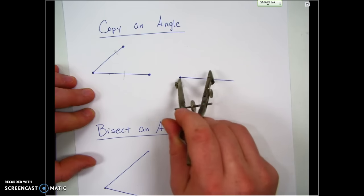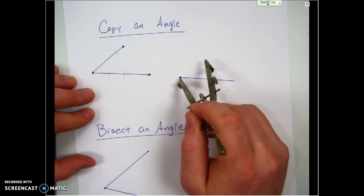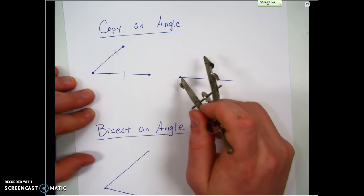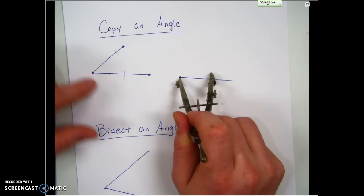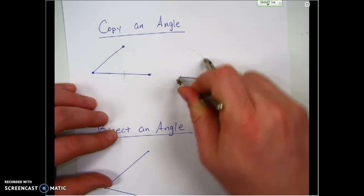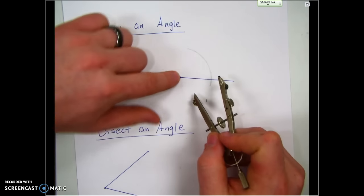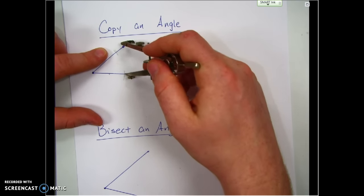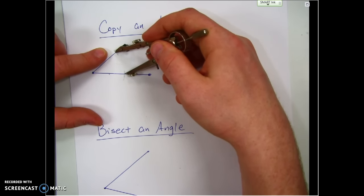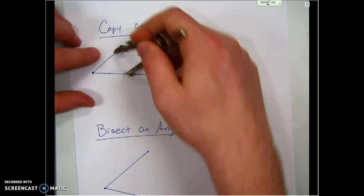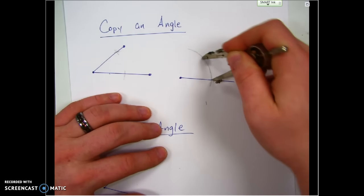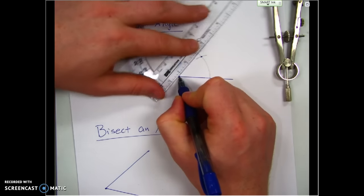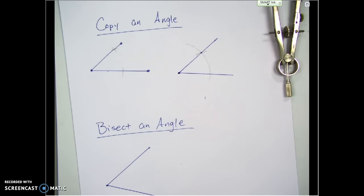I'm going to go over here and do the same thing — make a mark on the side of the new angle. I know my angle is going to point up here somewhere, so let me continue this arc up here. To figure out where the new other side of the angle goes, I need to figure out the distance between the points of my angle. I'm going to change the width of my compass to match that distance and place that mark up here. Then I connect the vertex of my angle to the intersection of these arcs — and there we go, I've copied my angle.